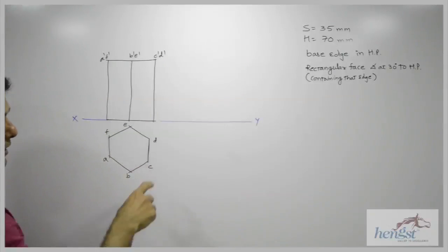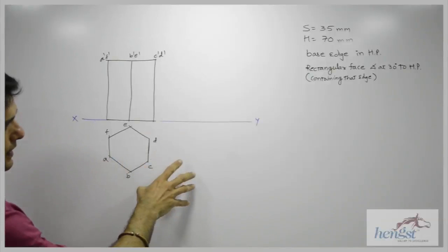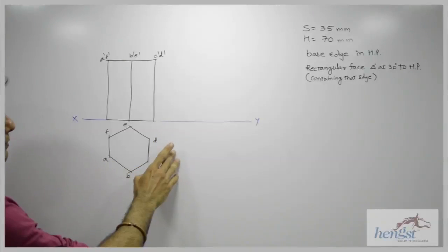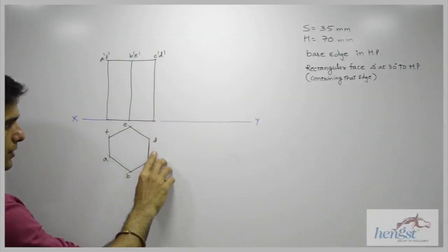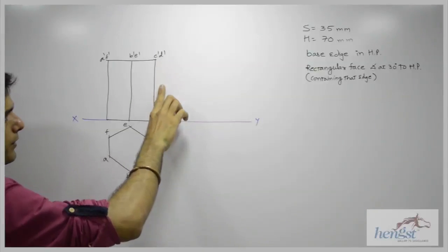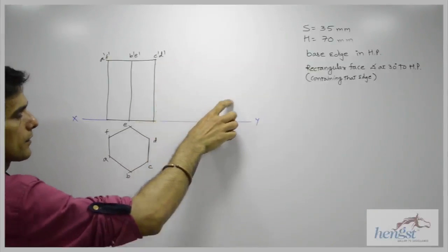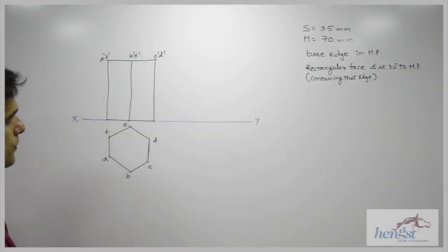Now they want the rectangular face containing that edge inclined at 30 degrees to HP. So this is the rectangular face containing that edge. This is inclined at 30 degrees.